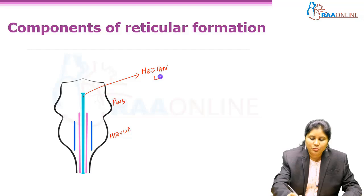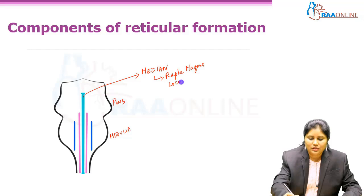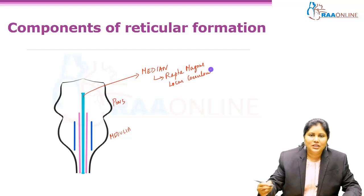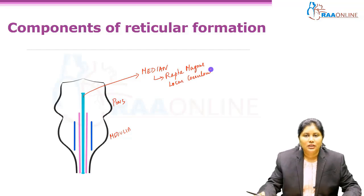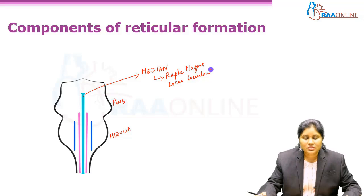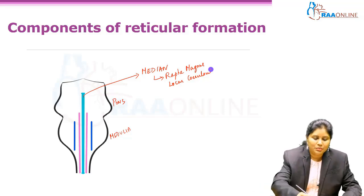What are the median group of neurons? We have got Raphe magnus nucleus and locus coeruleus. These two are the important collections of neurons present in the median group.